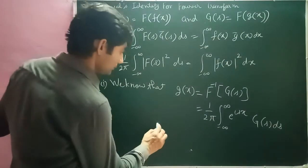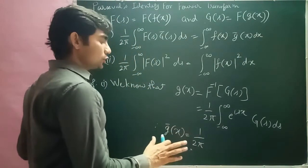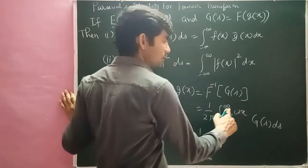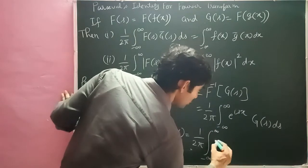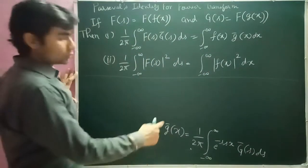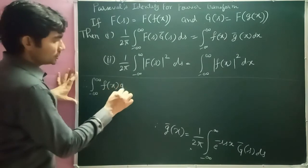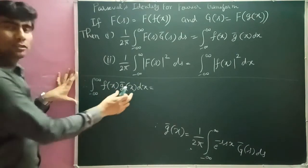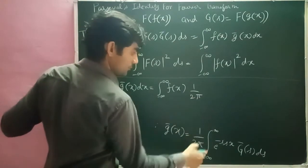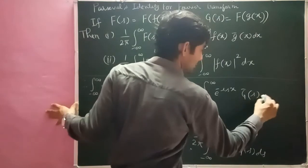अब यहां पर bar लेना है, तो G̅(x) कैसे बनेगा। G̅(x) = (1/2π) integral from minus infinity to infinity — यहां पर function है, उस पर bar आ जाएगा। e^(isx) में i को change करके minus i कर दें, तो e^(−isx) बनेगा। और G(s) पर bar आ जाएगा, तो G̅(s) ds।